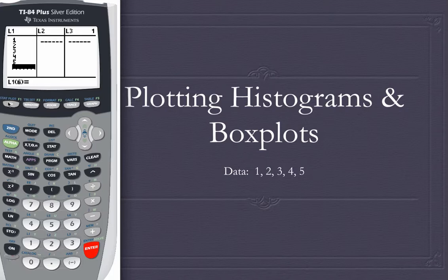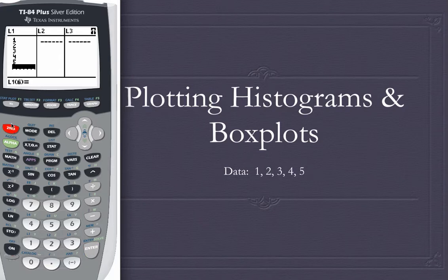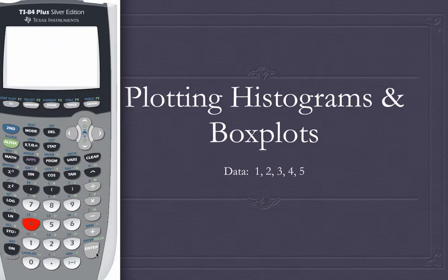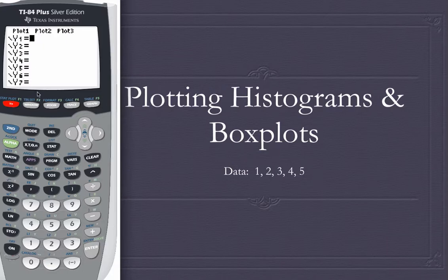There are two ways to graph data. There's the Y equals, and then right above the Y equals, there's the stat plot, which you can get to by pressing the blue key and then stat plot. So let's go to stat plot and we see that our three plots are all on. We'll turn them all off with option 4 and then enter. Then we'll go to Y equals to make sure nothing is in there. If there was something in Y2, we would scroll down to Y2 and press clear to get rid of everything in Y2.